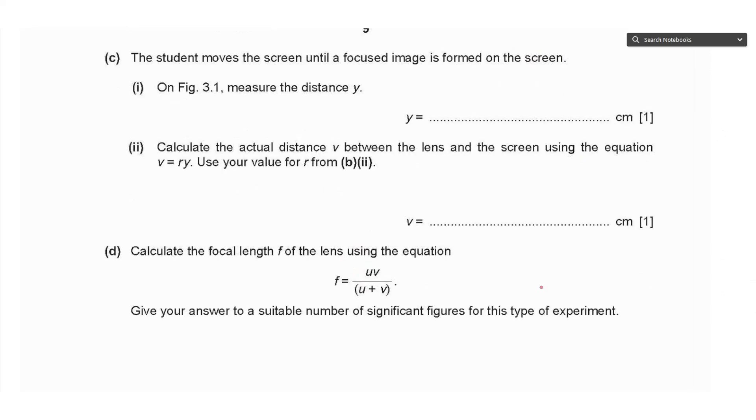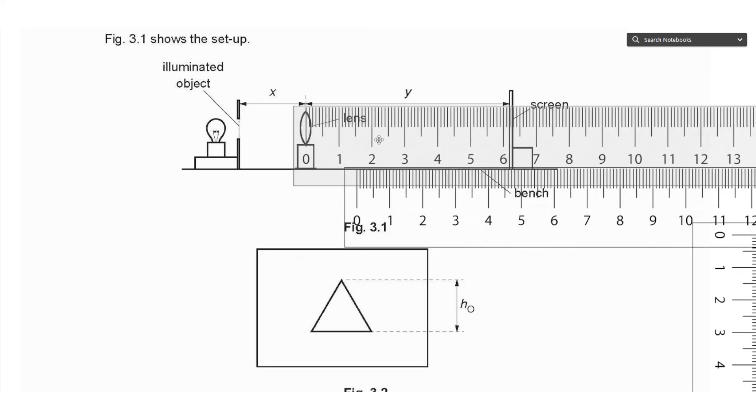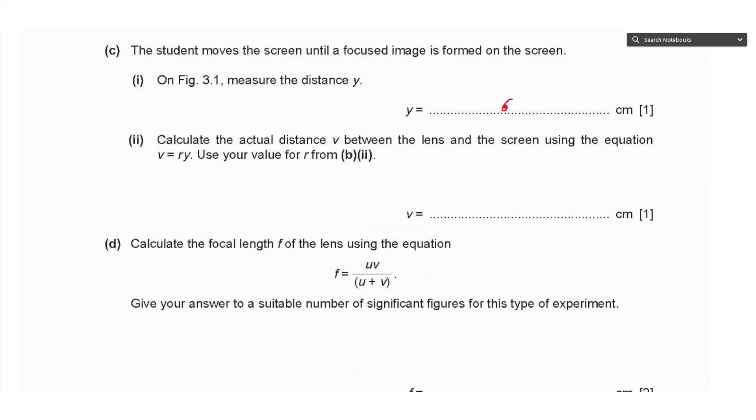Part C says the student moves the screen until a focused image is formed. On Figure 3.1 measure the distance y. Going back, we measure y using the ruler—this is approximately 6.2 centimeters. Part ii: Calculate the actual distance v between the lens and the screen using the equation v equals r times y. We multiply 6.2 by 10, which was the value of r, that gives 62.